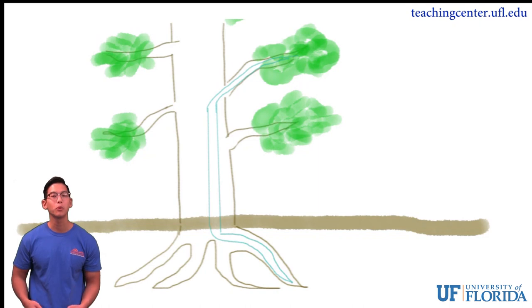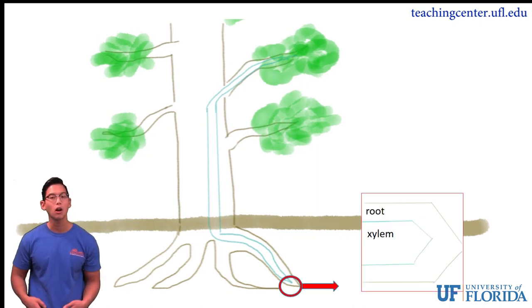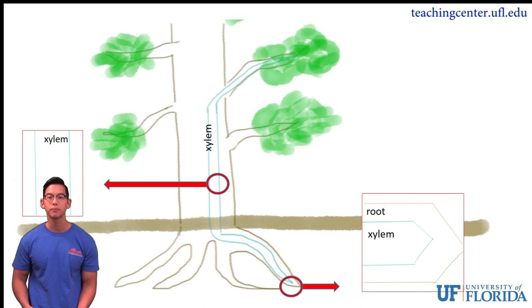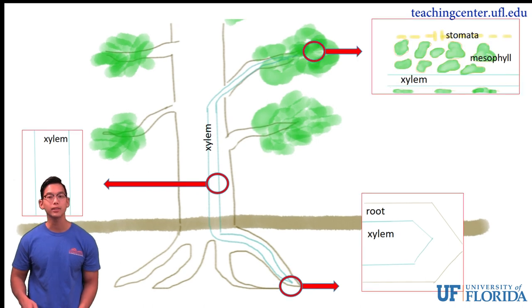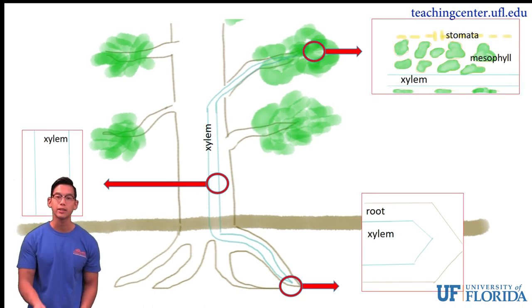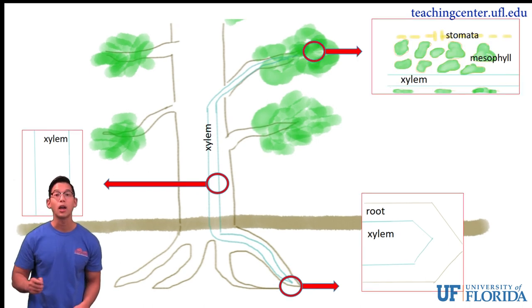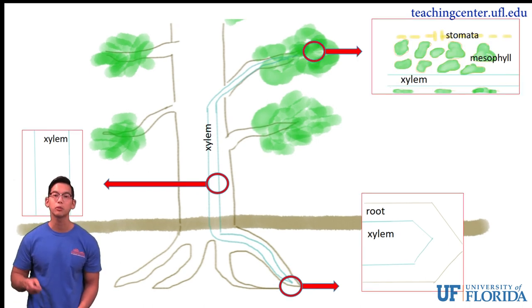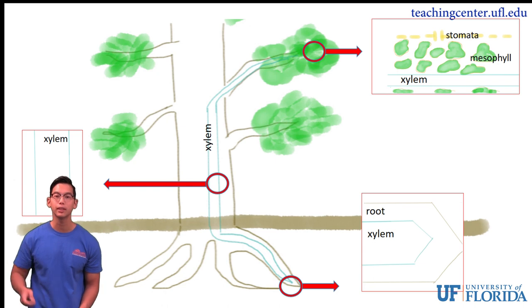Before we begin, let's take a look at our tree — more specifically, let's take a look at our roots, our stem, and our leaves. Notice how the xylem runs throughout the entire plant, starting at the roots and exiting through the stomata of the leaves.